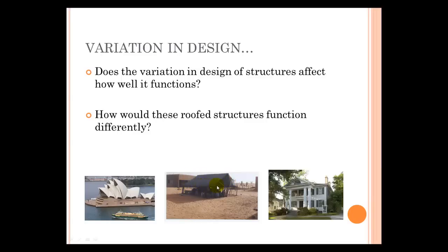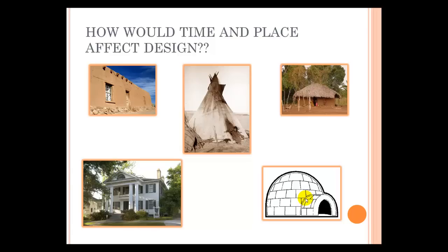This sort of tent in what looks to be Africa is designed to keep the heat off these people. So they've designed it so that air can flow through and the sun will stay off so that they stay cool and there's some shade. This regular house here is designed for all seasons, to keep the snow out in the winter, to keep the rain out in the summer. So you can see how the function of the structure affects how people design it.